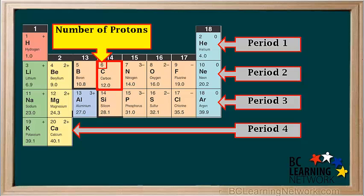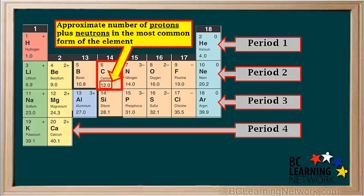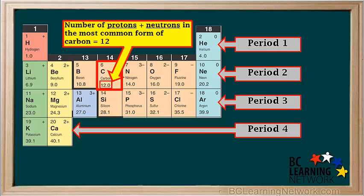The number on the top left of each box is called the atomic number. It tells us the number of protons in an atom of an element, so a carbon atom has six protons. The number at the bottom of the box is called the atomic mass. Elements have different forms of atoms with different numbers of neutrons — these are called isotopes. Generally, if we round this number to the nearest whole number, it gives us the total number of protons plus neutrons in the most common isotope of the element. So the total number of protons plus neutrons in an atom of the most common isotope of carbon is 12.